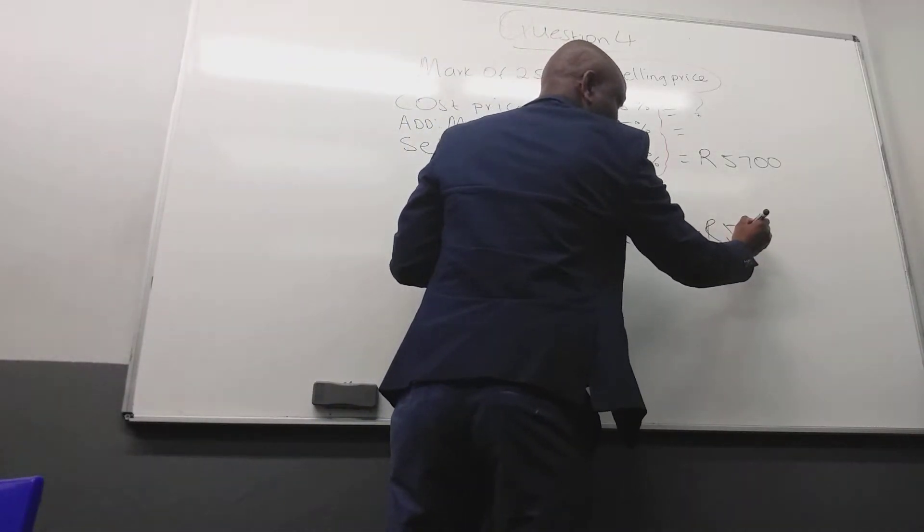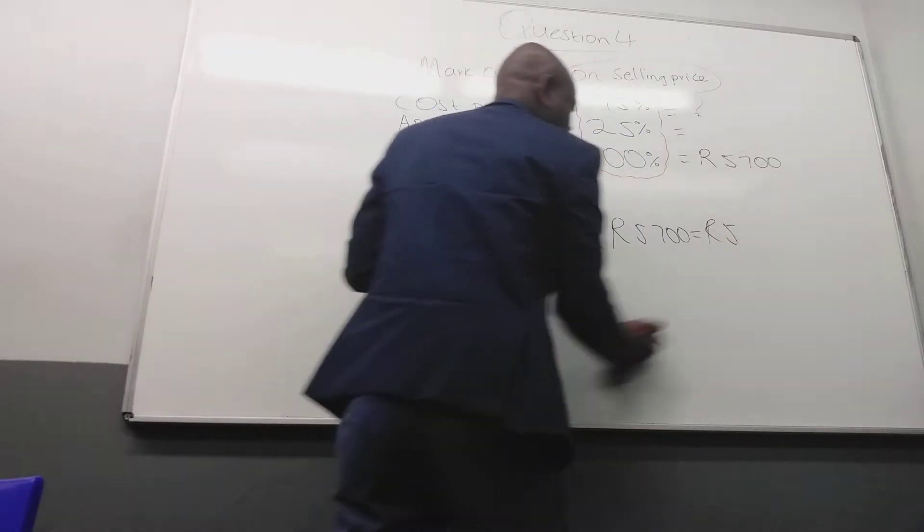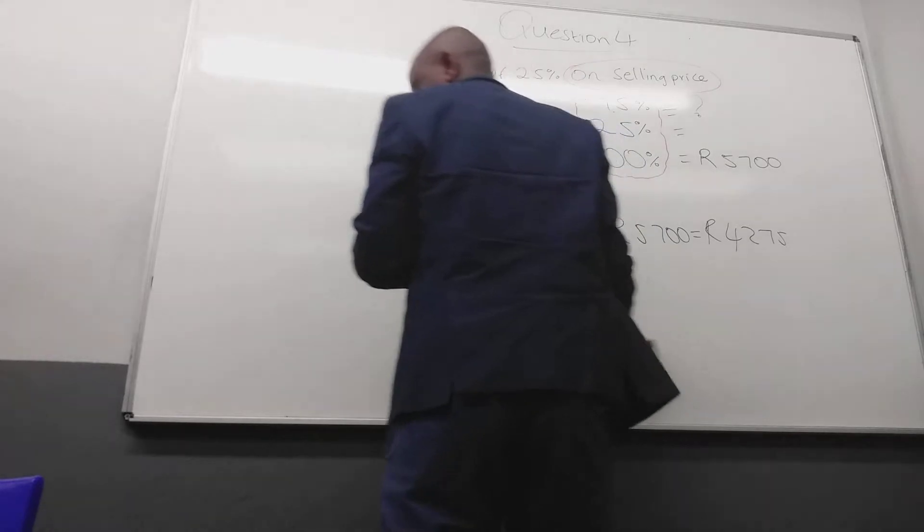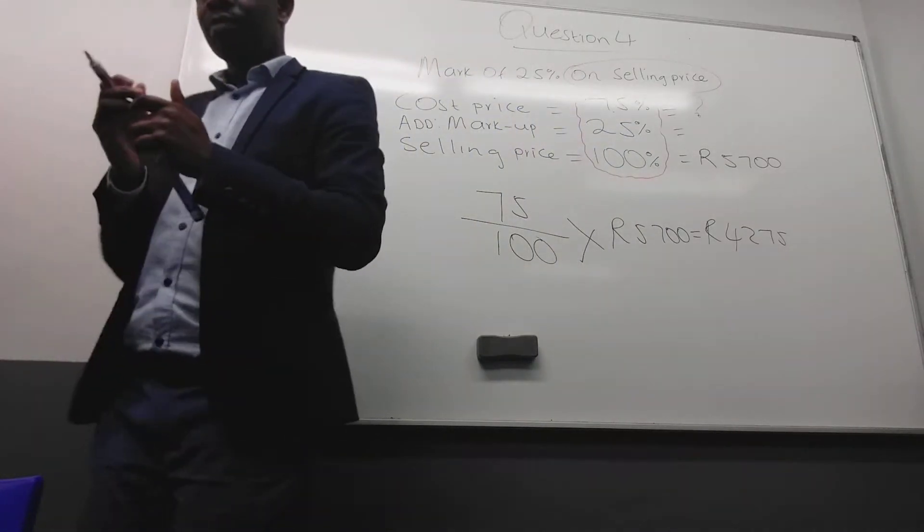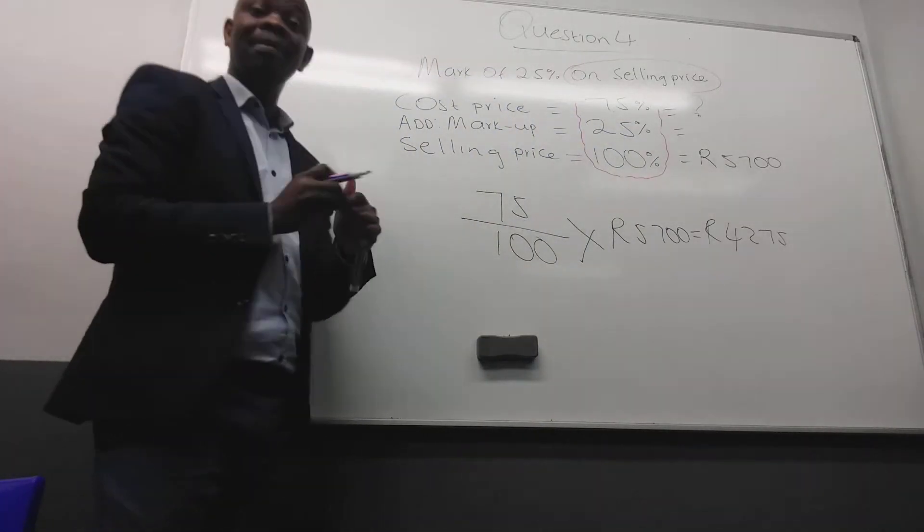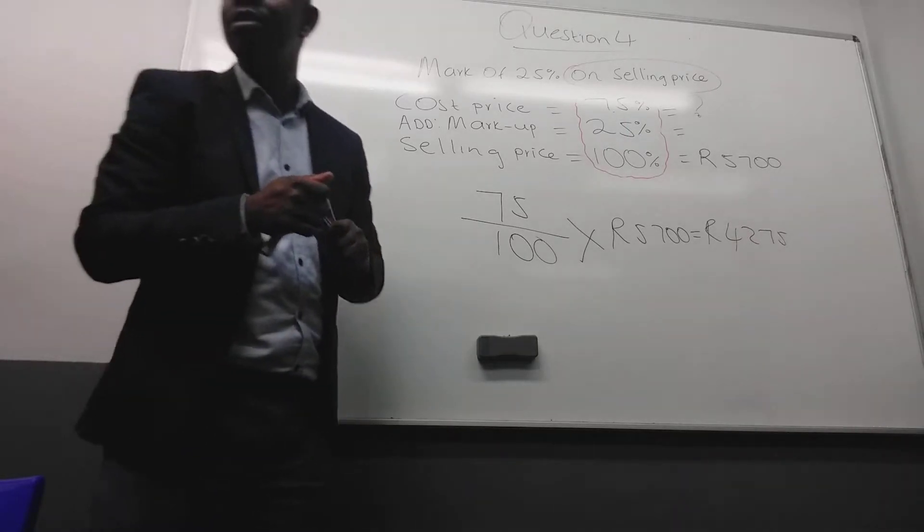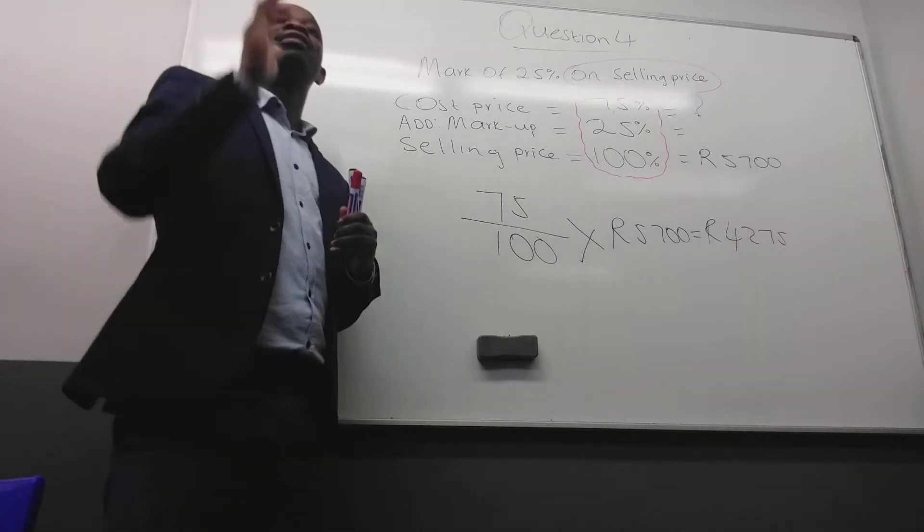Remember, you can use the formulas, but I don't like memorizing. For me, it's better to master this so that I can just keep changing what? The question marks. The question mark, I put this percentage on top. The amount, I put this one at the bottom. It's then that I can multiply by what? The amount, which is $7,700. This will give me the answer that they are looking for. Which is how much? $5,775. Remember, this is for the beginners.